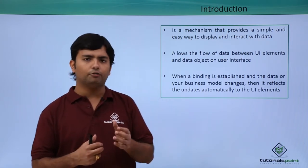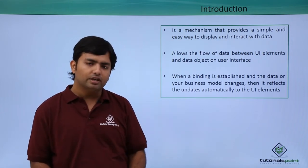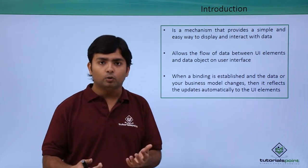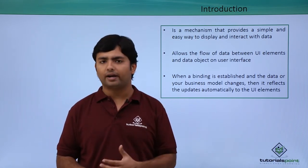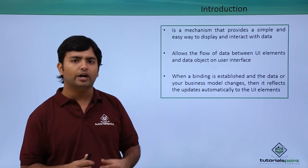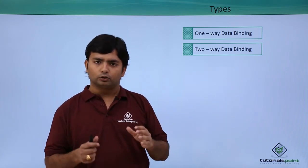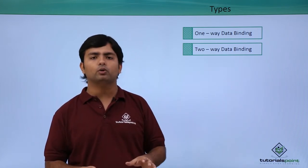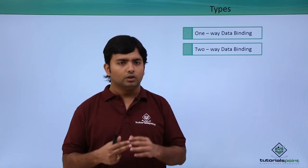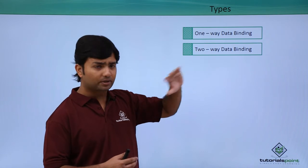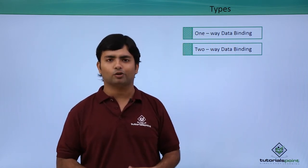Not only the data source, but if you make any changes in the business model — the middle layer — the changes will also be reflected. And it could be bi-directional if you use two-way binding. In WPF you have two kinds of bindings: one-way binding and two-way data binding. In the coming two videos, we are going to discuss separately the concept of one-way data binding and two-way data binding.